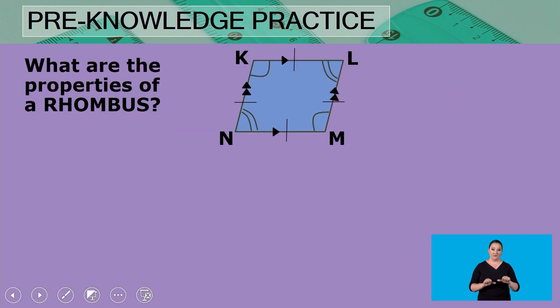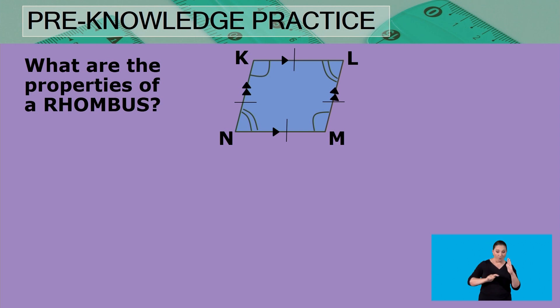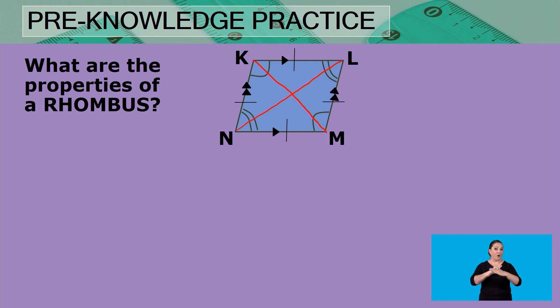Let's move on to a rhombus. A rhombus is a special parallelogram, meaning all the properties of a parallelogram also apply to a rhombus. But what makes a rhombus special is that all of the sides are equal — KL equals LM equals MN equals NK. The diagonals bisect each other, and they also bisect each other at 90 degrees, so they are perpendicular to each other.